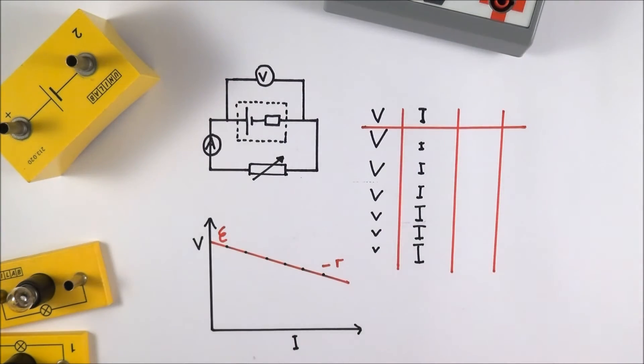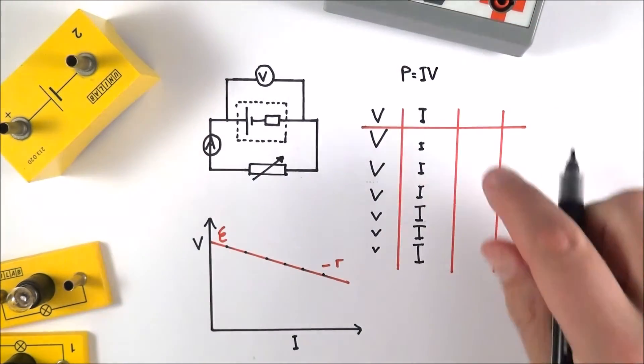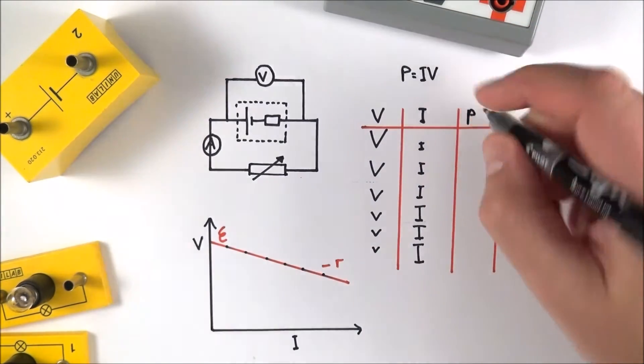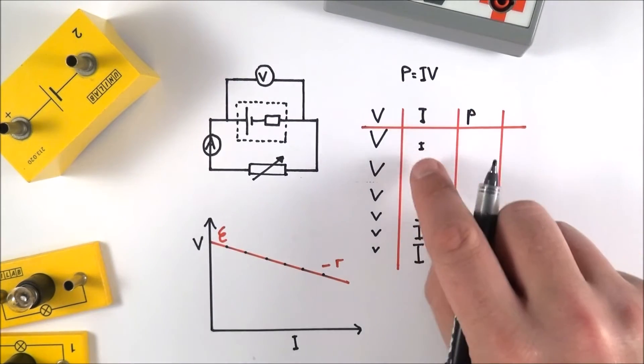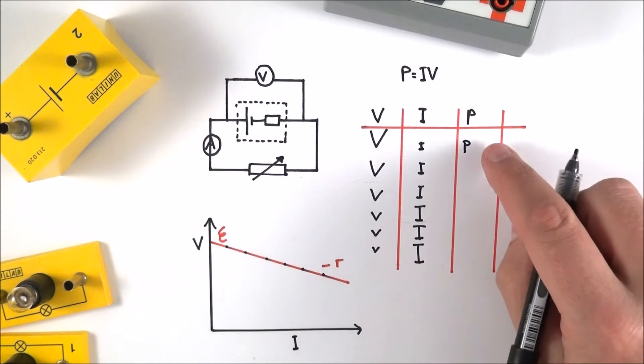We can use the equation P equals I times V to work out the power. You can record the power, and what you'll find is that if you've got a large value times a small value, that gives you quite a small value of power.